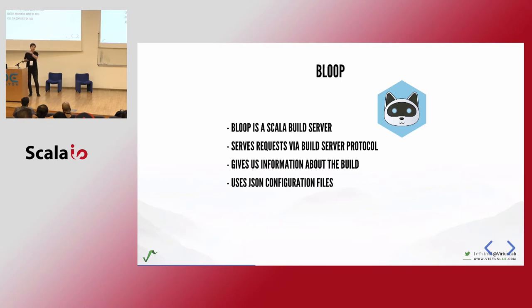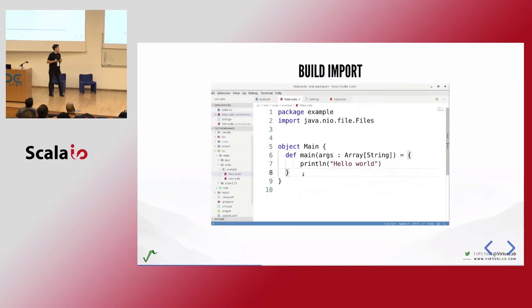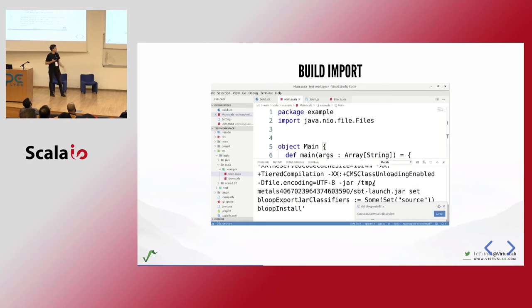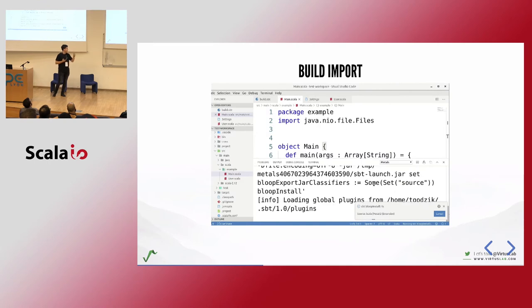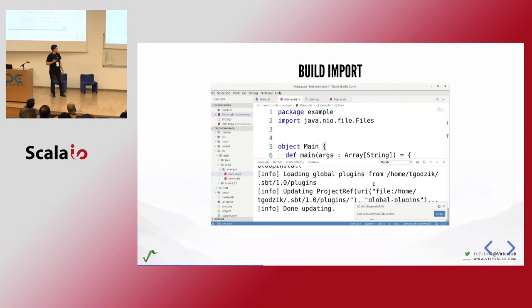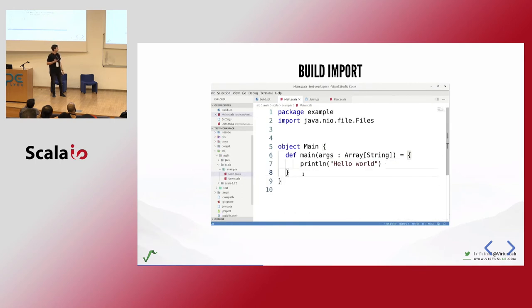Bloop is a Scala build server that works via the Build Server Protocol — very similar to LSP. It gives us all the information we need about the build, allows us to compile things, and uses JSON configuration files created by the build tools. It serves that information to any BSP client — in this case, Metals. Opening a workspace shows a popup, we run the sbt-bloop-install command which creates the JSON configuration files, and it just works. It needs to load SBT, which takes a while, but then completions and all LSP features are available.